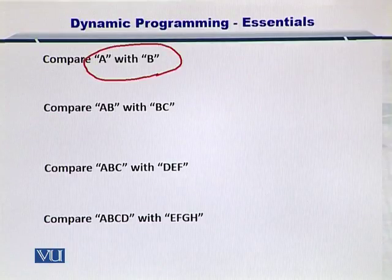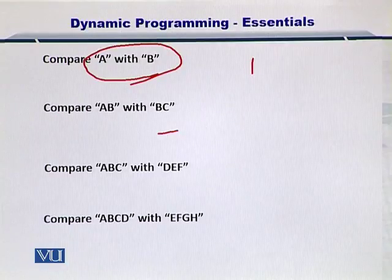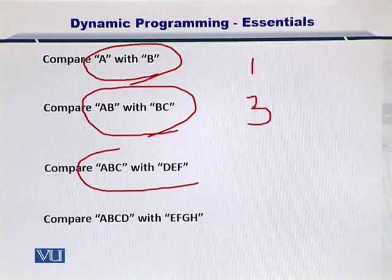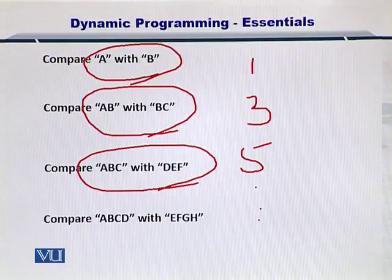If the string was just one character, you had one comparison. If the string were of length two, you had three comparisons. If the string were of length three, you had five comparisons, and so on.